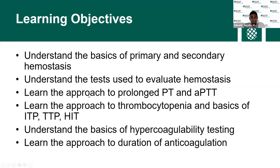The learning objectives are to understand the basics of primary and secondary hemostasis, understand the tests used to evaluate hemostasis, learn the approach to a prolonged prothrombin time and APTT — which is activated partial thromboplastin time — and learn the approach to thrombocytopenia and the basics of ITP (immune thrombocytopenia), TTP (thrombotic thrombocytopenic purpura), heparin-induced thrombocytopenia, the basics of hypercoagulatory testing, and the approach to the duration of anticoagulation.